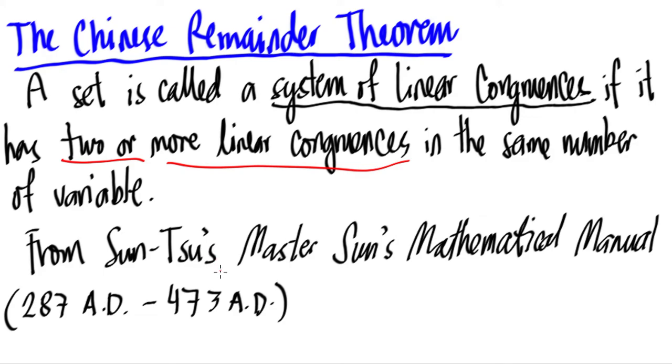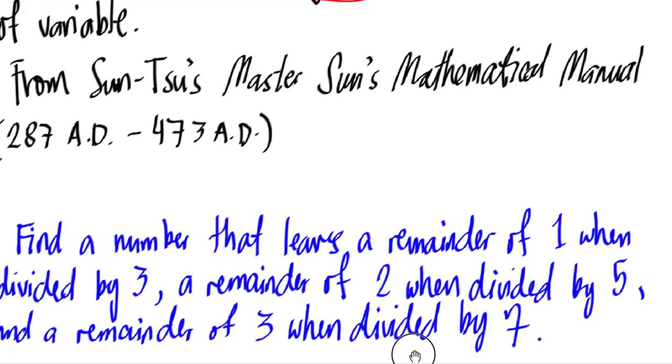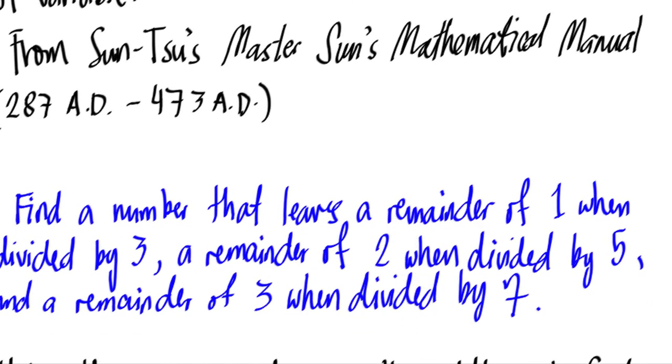This appears in his great book, Master Sun's Mathematical Manual, which was written between 287 AD to 473 AD, and the puzzle goes like this.